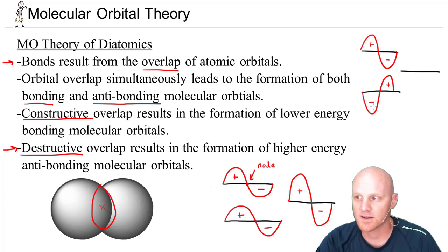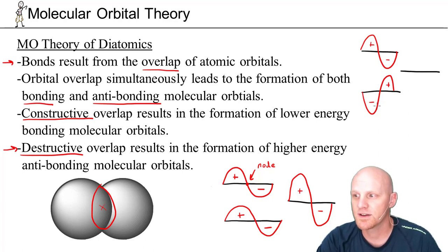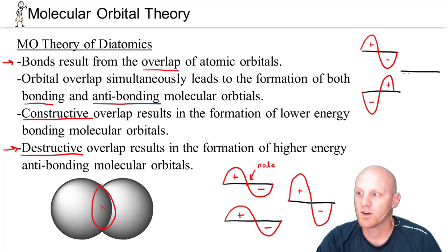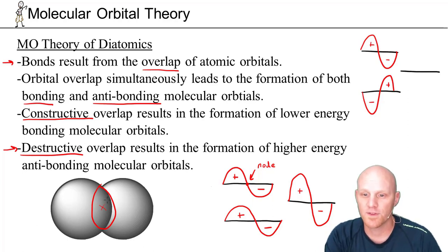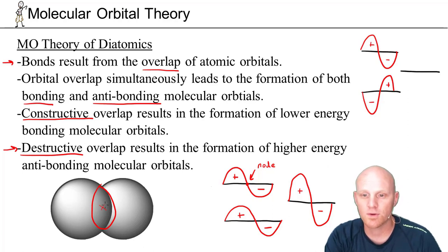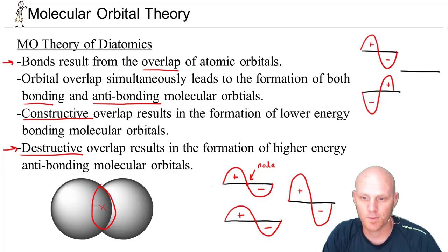When elements of the wave functions are in opposite phases — opposite signs mathematically, not charge, just the mathematical sign of the function — they cancel each other out. In the case of overlapping orbitals, this creates a node every time. Constructive overlap always leads to the creation of a lower energy bonding molecular orbital, while destructive overlap always leads to the creation of a higher energy antibonding molecular orbital.